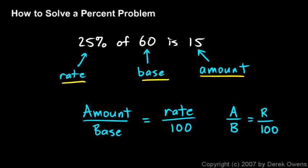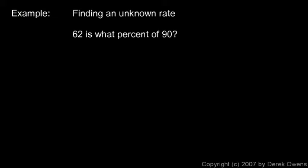Those three variables — a, b, and r — show up in any percent problem. If we know two of them, we can find the third. Next we'll look at three examples: one finding an unknown rate, one finding an unknown amount, and one finding an unknown base.